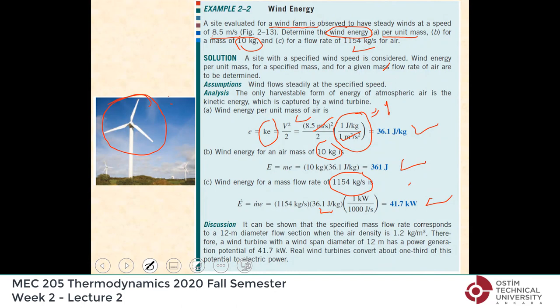In reality the conversion rate is about one-third, so you would get roughly 15 kilowatts, because nothing is perfect — although ideally the potential is there.